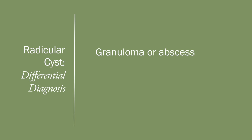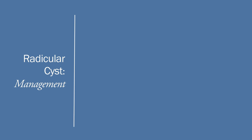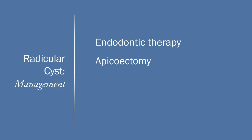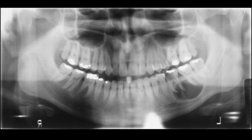The radicular cyst will displace roots of adjoining teeth; some roots may undergo resorption. It can displace the buccal or lingual cortical plates. In the maxillary posterior region the sinus floor may be elevated; in the mandibular posterior region the inferior alveolar canal may be displaced. For differential diagnosis we must include periapical granuloma or abscess. A lateral radicular cyst must be differentiated from a lateral periodontal cyst. Odontogenic keratocyst may frequently appear as a radicular cyst. A small radicular cyst may be treated by root canal therapy; recurrence is uncommon.